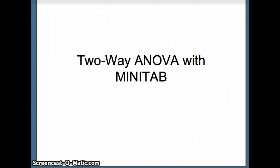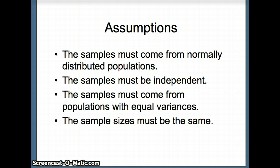In this presentation, we will look at two-way analysis of variance with Minitab. There are several assumptions for this model. First, the samples must come from normally distributed populations. Second, the samples must be independent. Third, the samples must come from populations with equal variances. And fourth, the sample sizes must be the same.